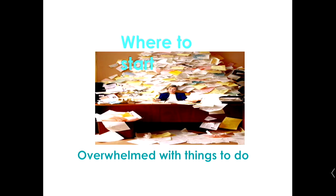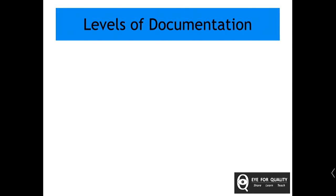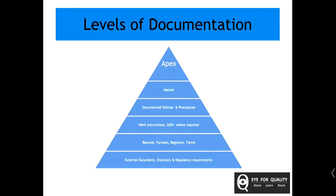Where to start when you're overwhelmed? There are so many things and you really don't know what to do — this happened with us too. These are the different levels of documentation required for NABH: first, external documents and statutory and regulatory requirements; then record formats, registers, and forms; work instructions and SOPs; documented policies and procedures; manuals; and APEX.